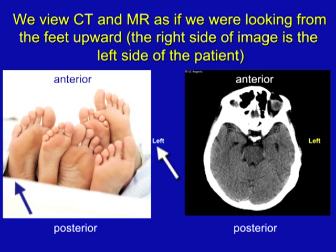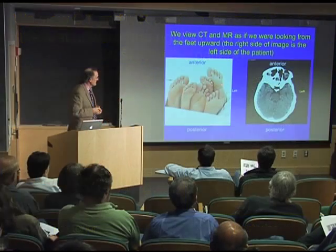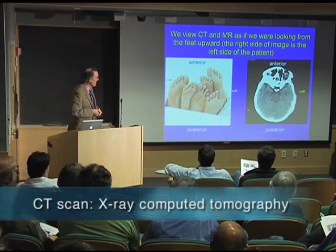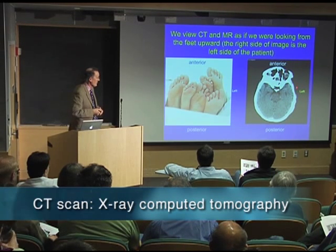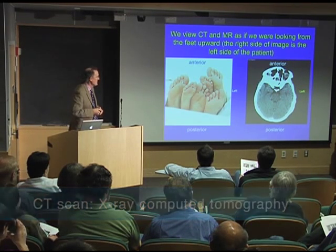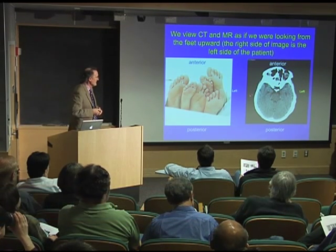Just imagine the patient lying in bed. The same convention applies for a CT scan on the axial plane — the left side of the body is on the right side of the image, and the right side of the body is on the left side of the image.